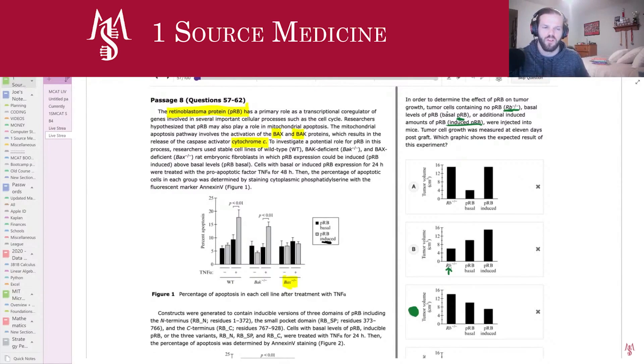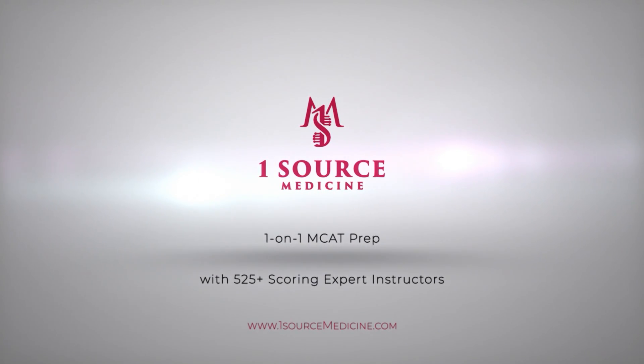And so the tumor volume is going to get massive because they don't have the capacity to check tumor volume by triggering apoptosis. Okay. So this graph is basically like inverse of what you would expect in the graph over here in the passage. Because the graph in the passage is graphing apoptosis, and we would expect tumor volume to be inverse of apoptosis rate. Does that make sense? Yeah, yeah. Okay, cool. Perfect.